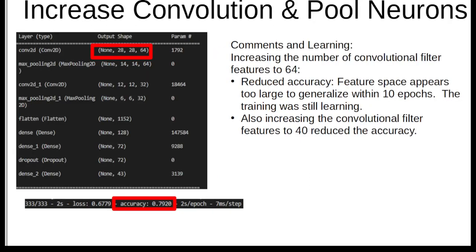After that, I tried playing with the convolutional and pooled filter neurons. I increased the first set of filter neurons up to 64 that reduced the accuracy. It seems like it failed to generalize appropriately with the 10 epochs, and it still looked like it was not on a learning path at the end of 10 epochs.